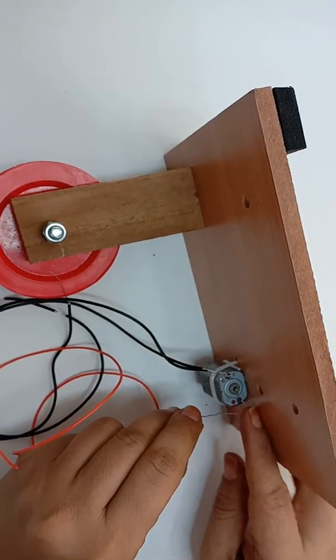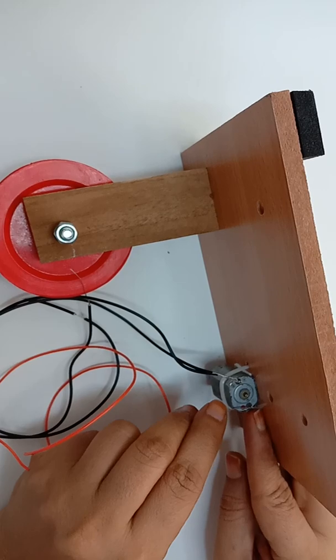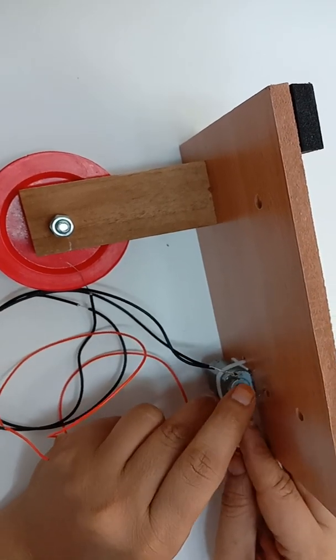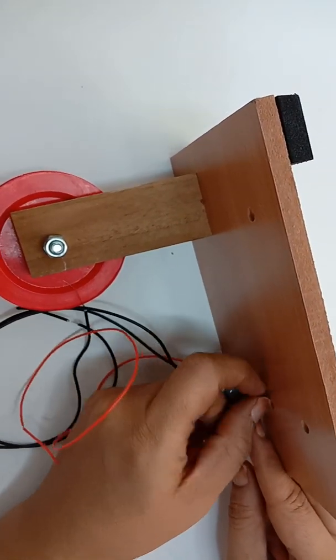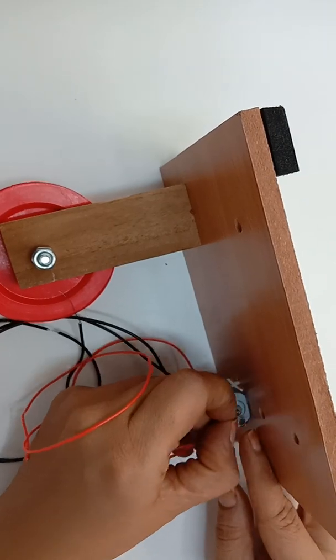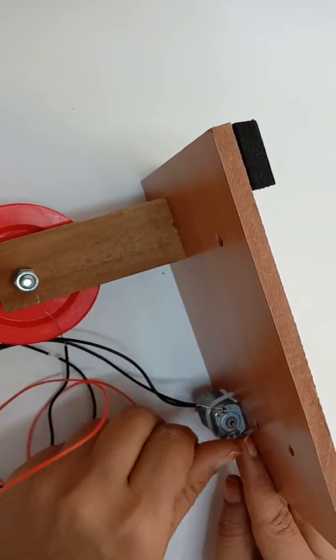Now I am inserting this red wire through this pin of dynamo. See how it's coming out. Now I will be twisting it once again.